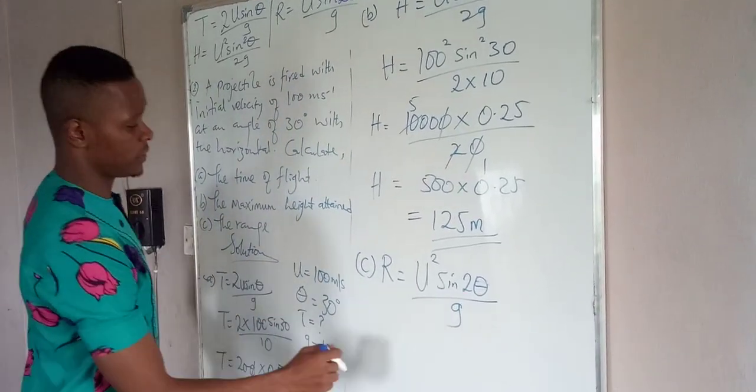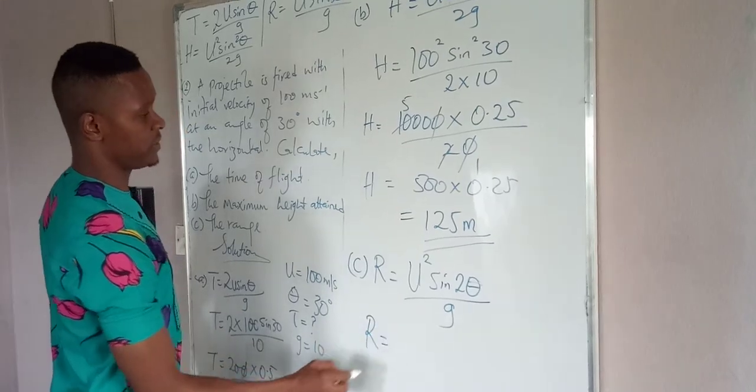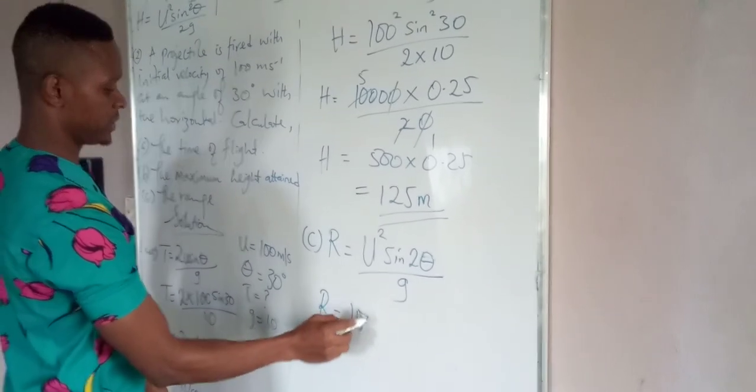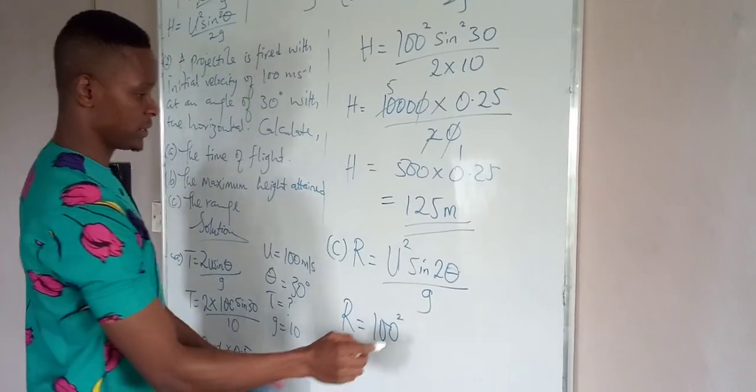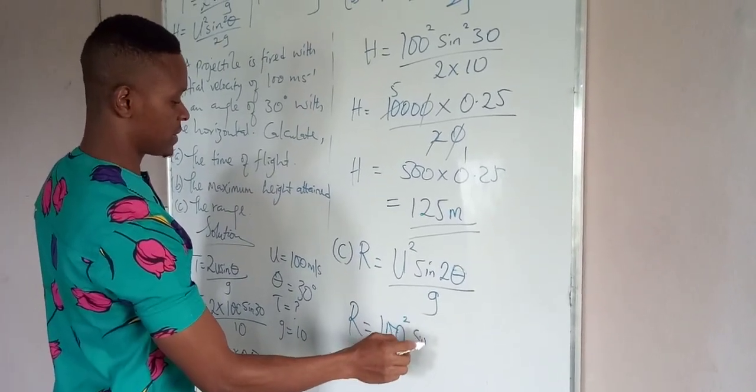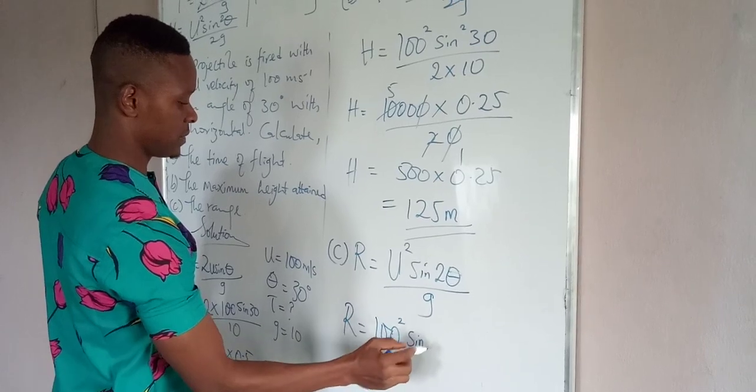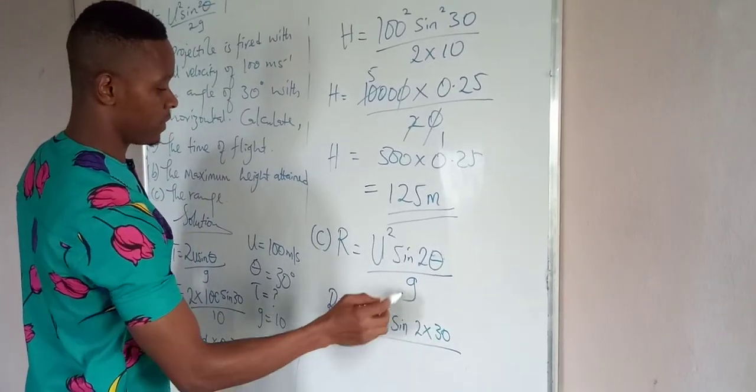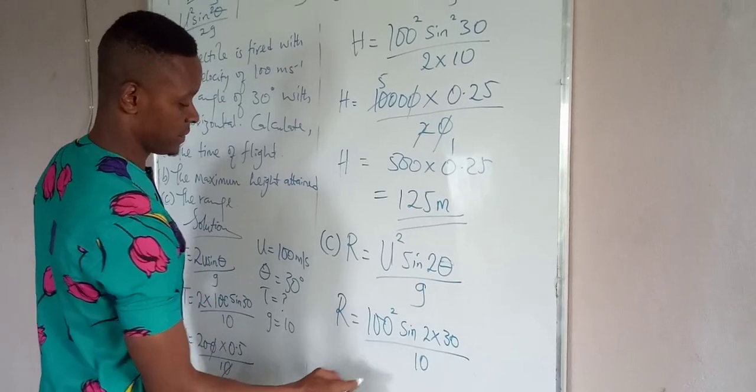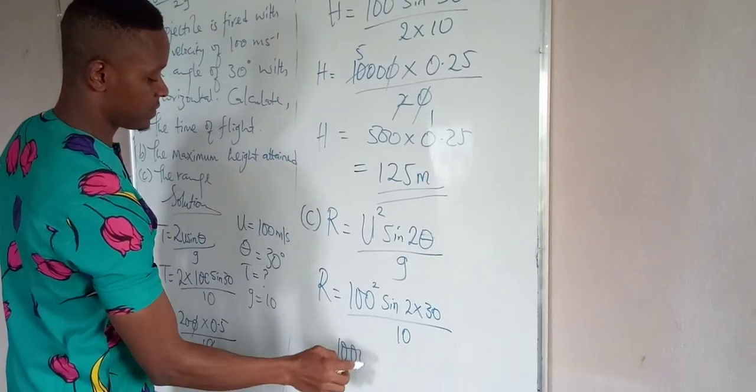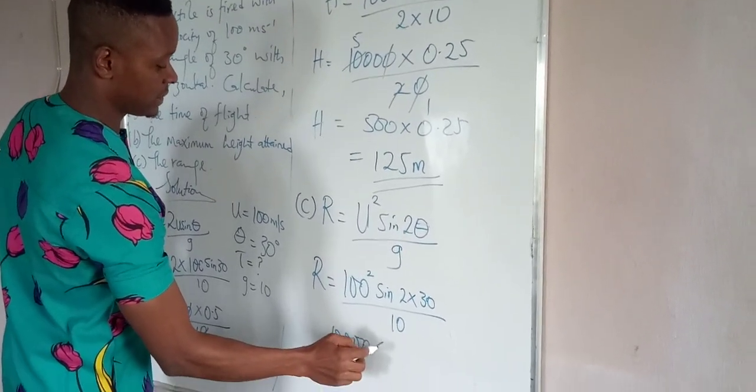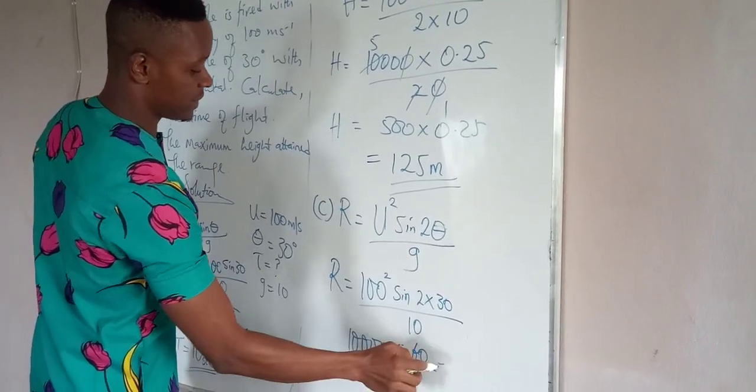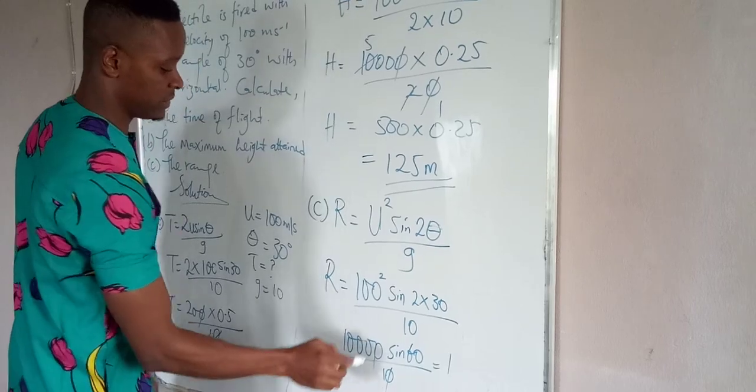That will give us, substituting: r equals 100 squared sin 2 times 30 all over 10. That will give us 10,000 sin 60 over 10, which is - this will cancel out this.